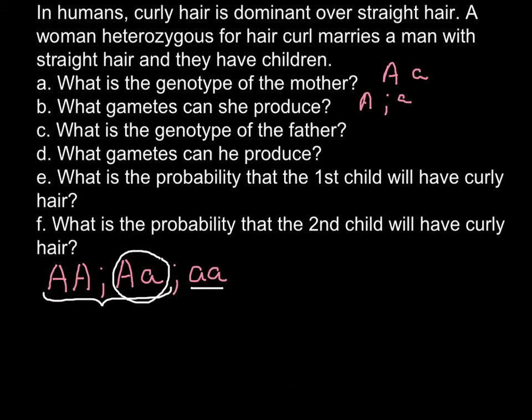Question C: What is the genotype of the father? Since the father has straight hair, his genotype would be small a, small a. Question D: What gametes can he produce? Since he is homozygous recessive, he can produce only one type of gamete, which is small a.